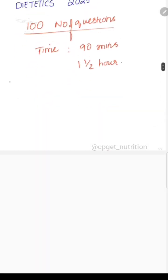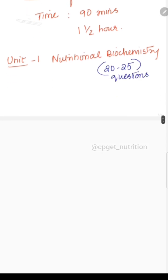Coming to the weightage, firstly the number of questions that you can expect from Nutritional Biochemistry, which is the first unit, is around 20 to 25. You can expect around 20 to 25 questions from the first unit.